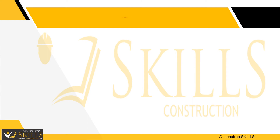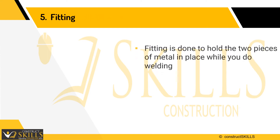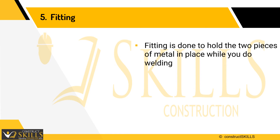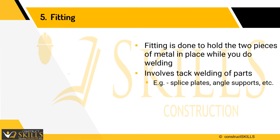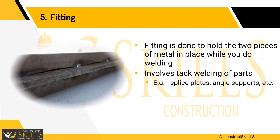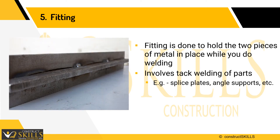The fifth step is fitting. The main purpose of fitting is to hold the two pieces of metal in place while you apply the actual final weld. This is usually done by clamping for tack welding. Tack welds let you weld without worry of your metals getting misaligned during final welding. Tack welds are weak welds and can be removed easily, which is necessary when alignment is wrong.